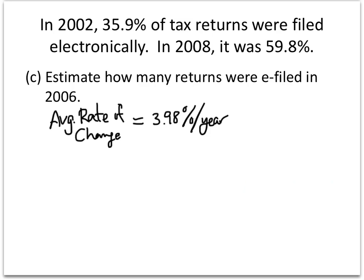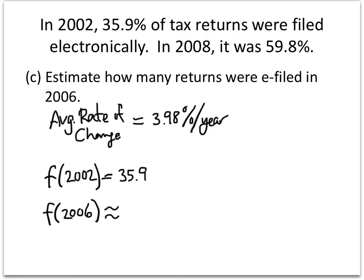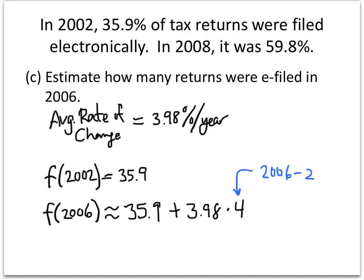The solution method is pretty much the same. We have the average rate of change of 3.98% per year. Since 2006 is before 2008, let's start at 2002 and go forward. In 2002, the percentage was 35.9%. The average rate of change tells us every year the percentage of e-filed returns goes up by 3.98. From 2002 to 2006 is four years (2006 minus 2002), so we expect the percentage to go up by 3.98 four times. Our interpolation is 35.9 plus 3.98 times 4, which works out to 51.82%.